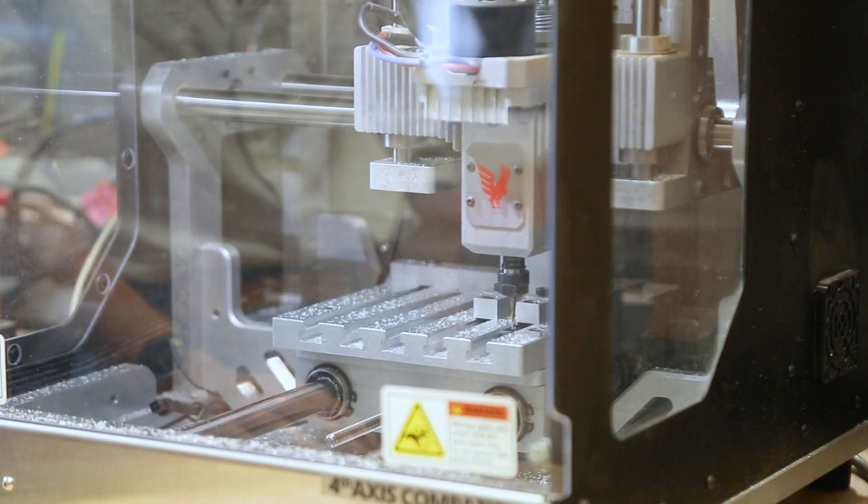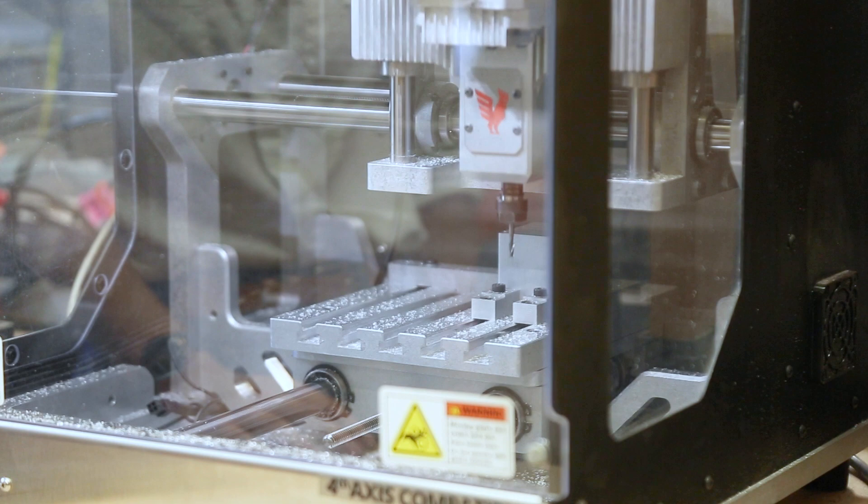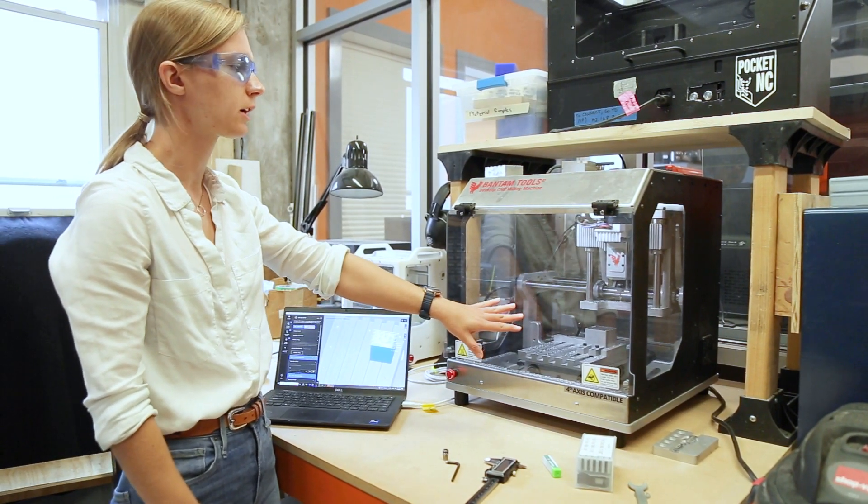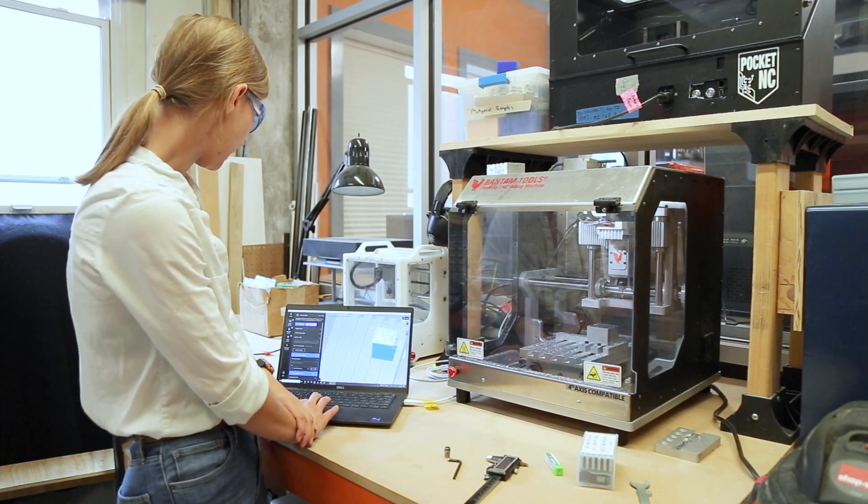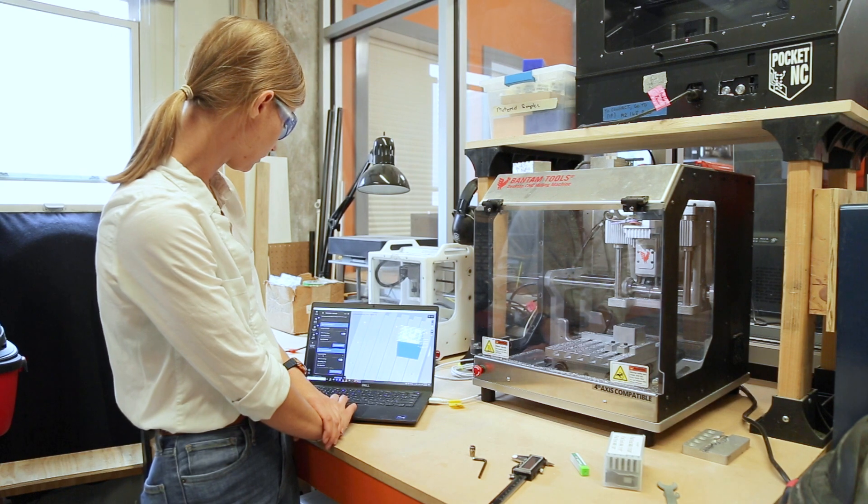Now we don't need to redo any of our setup like we did before where we found the corner of the block. It still knows where the block is. All we did was change the tool, so now we can go ahead and run our other tool path.